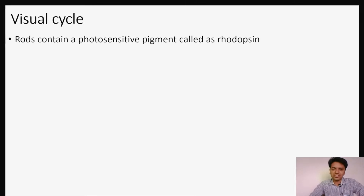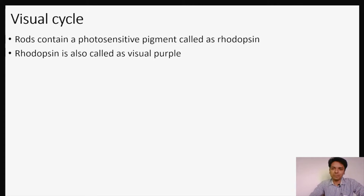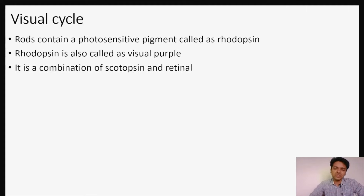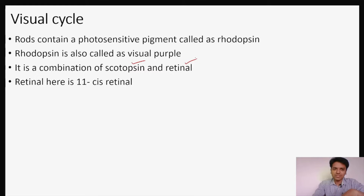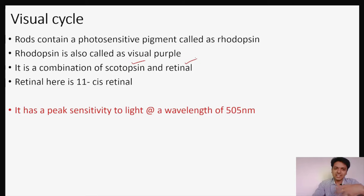Let's start with the visual cycle. The rods contain a photosensitive pigment called rhodopsin, also known as visual purple. This visual purple or rhodopsin is a combination of two compounds: one is an opsin — specifically scotopsin — and the other is an aldehyde called retinal.